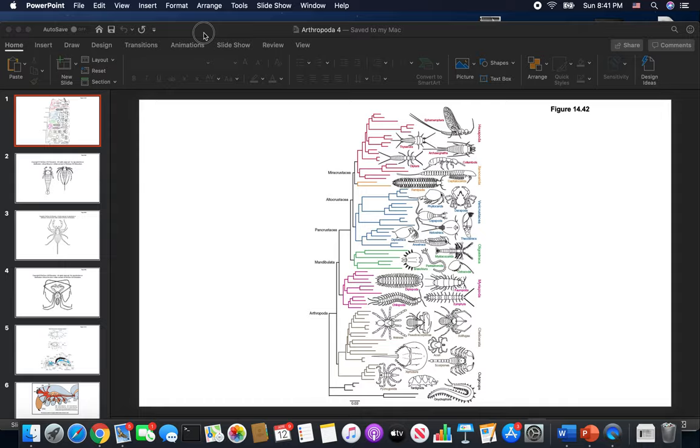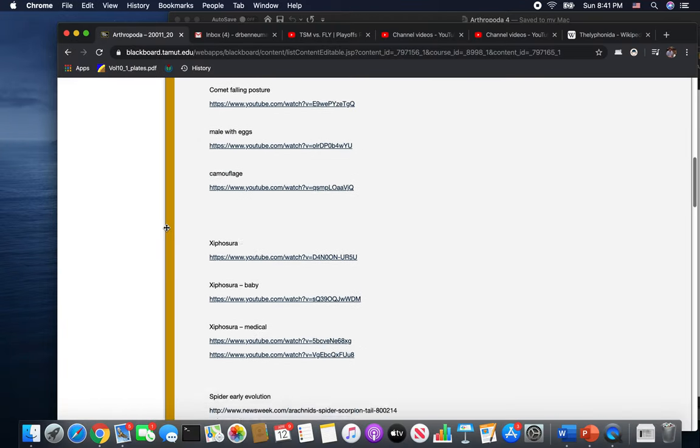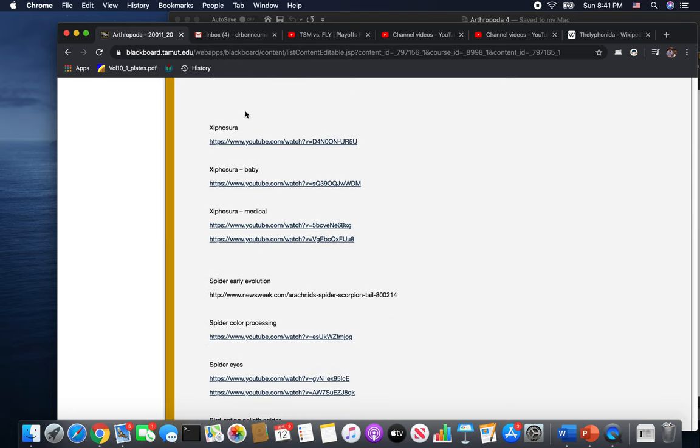So let's look at our little video selections over here. So you're going to have some wonderful things. Xiphosurids, these would really go with the previous section. So these are going to be your horseshoe crabs.